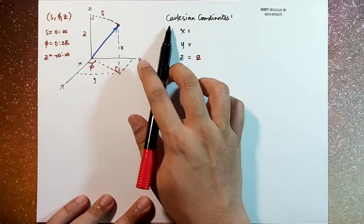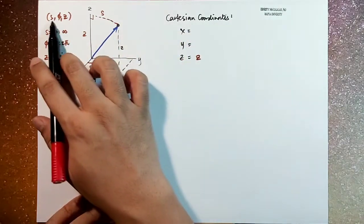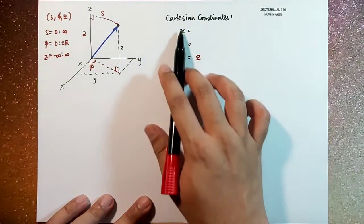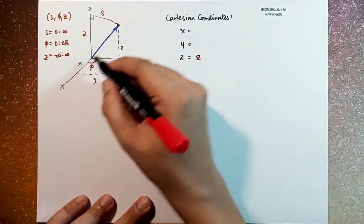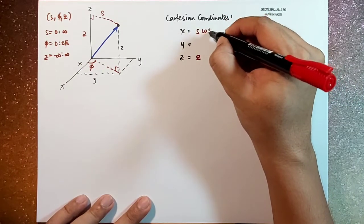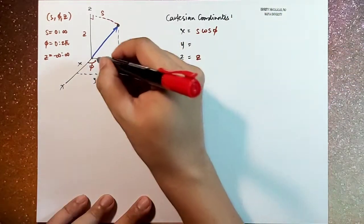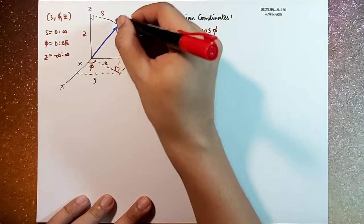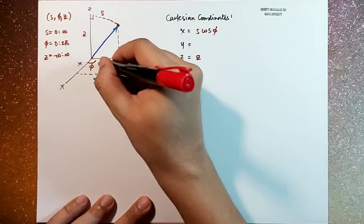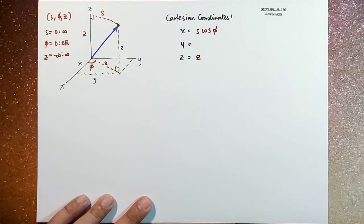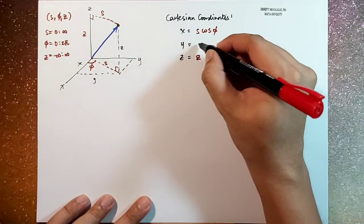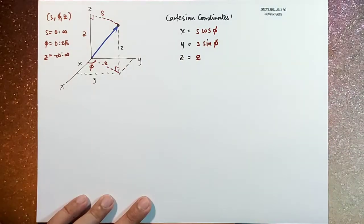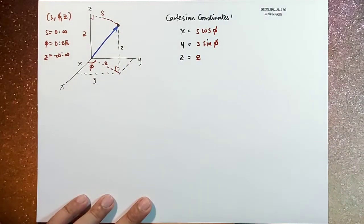So the relationship between the Cartesian coordinate system and the cylindrical coordinate system is given by this. So x is equal to s cosine phi. So remember, this is s as well, the projection of this vector to the x, y plane. And then y would be s sine phi. And then z is the same as z.